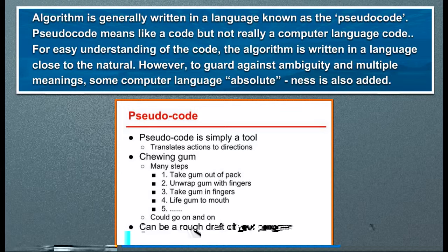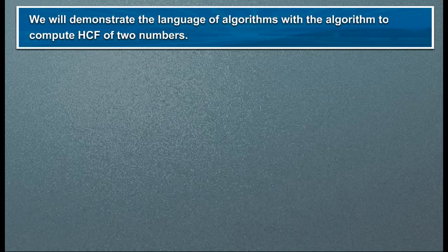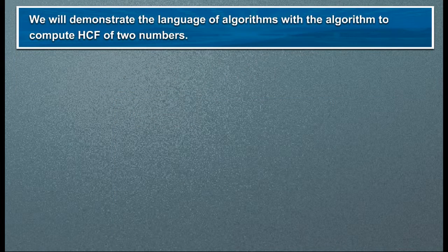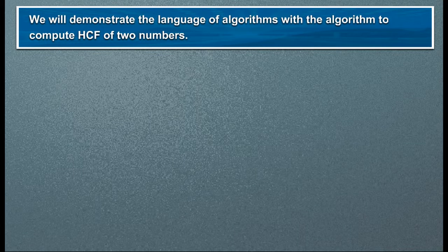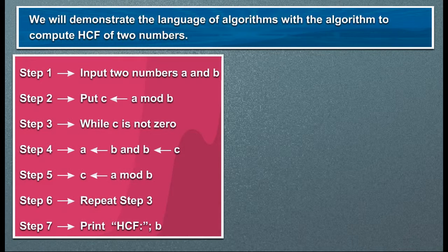However, to guard against ambiguity and multiple meanings, some computer language absoluteness is also added. We will demonstrate the language of algorithms with the algorithm to compute HCF of two numbers.